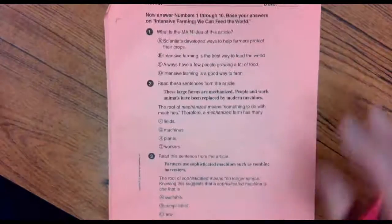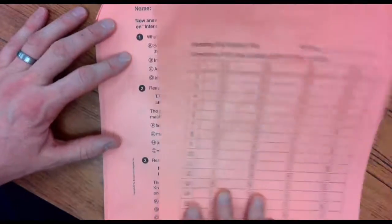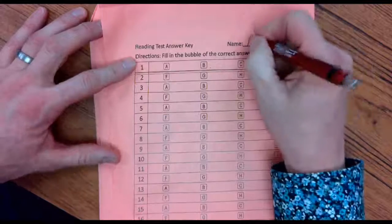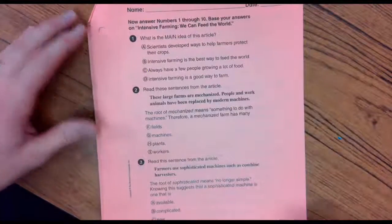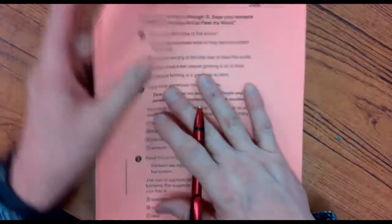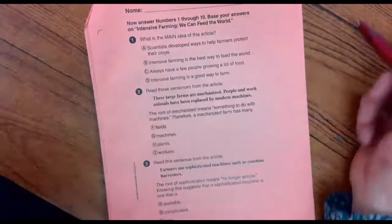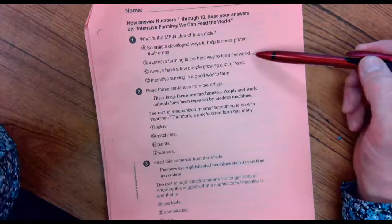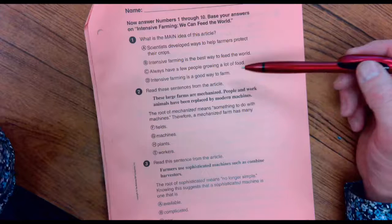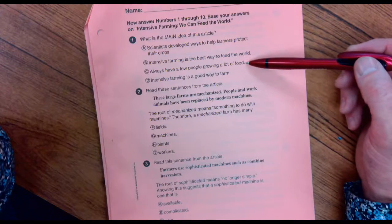Alright, let's check out number one. You should have your answer key. Make sure your name's on that one. Number one says, what is the main idea of this article? Scientists develop ways to help farmers protect their crops. Intensive farming is the best way to feed the world. Always have a few people growing a lot of food.